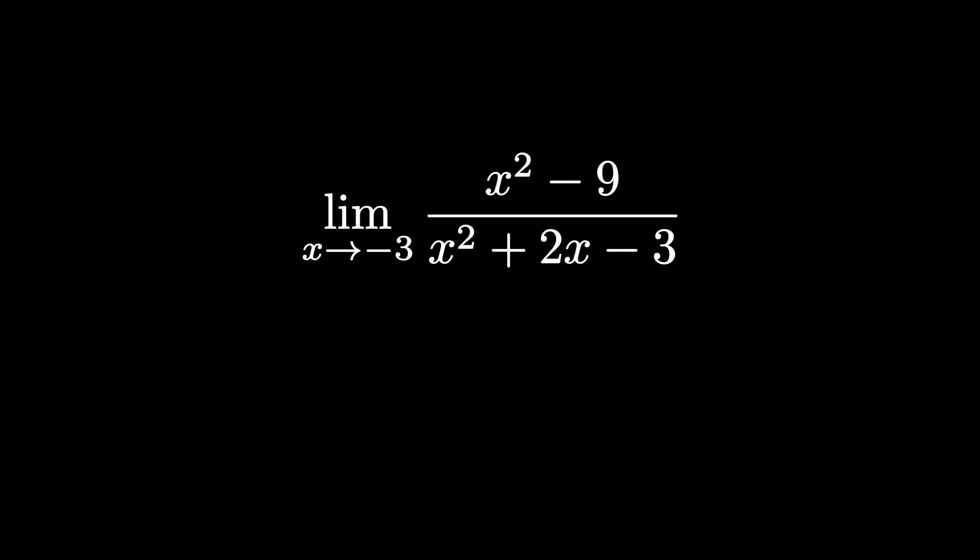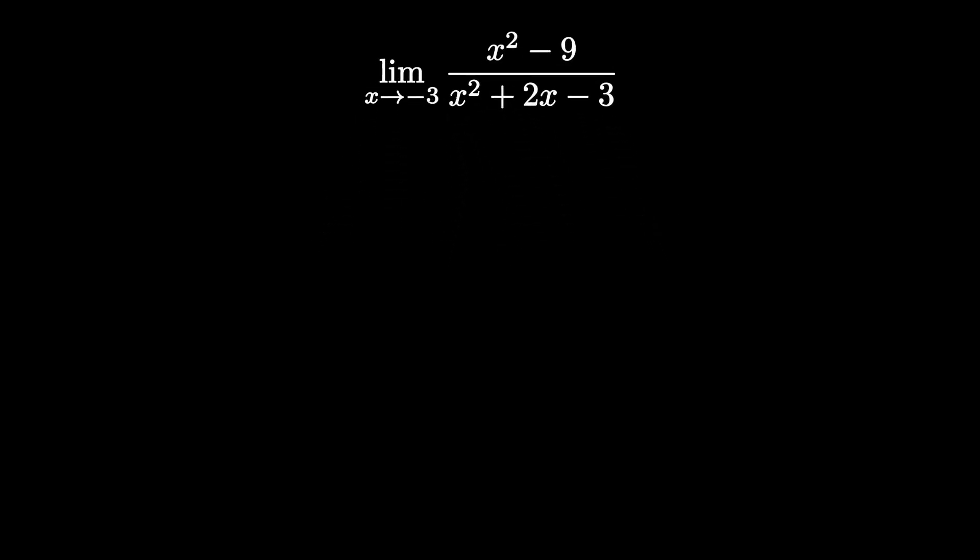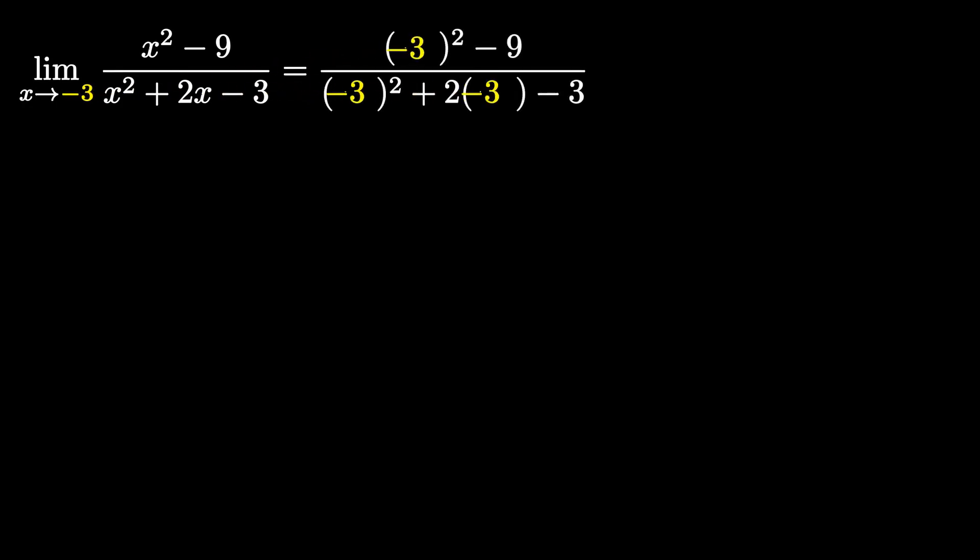So as always, the first thing when it comes to evaluating limits is you want to plug in the value that x is approaching, which in this case is negative 3. So we want to plug in negative 3 into our function, and when we do that, that'll give us negative 3 squared minus 9 all over negative 3 squared plus 2 times negative 3 minus 3.